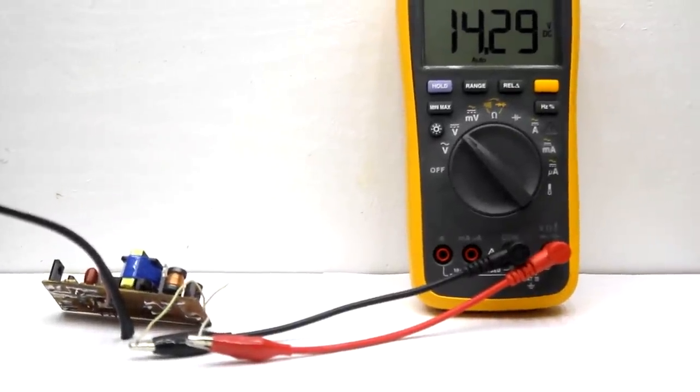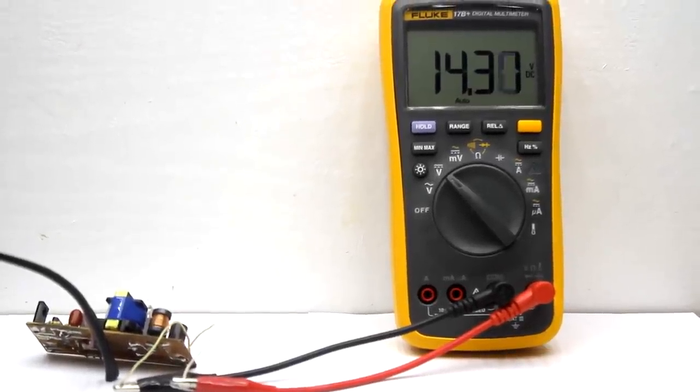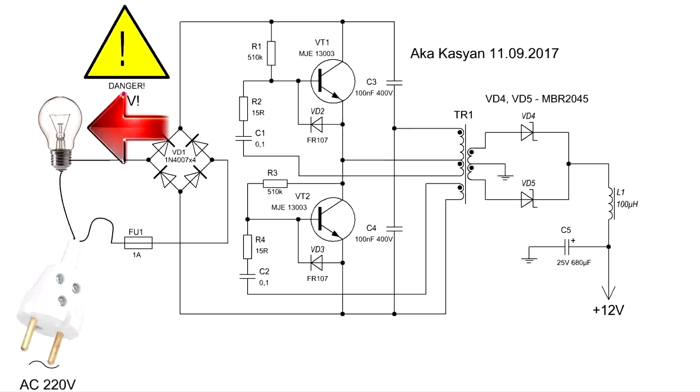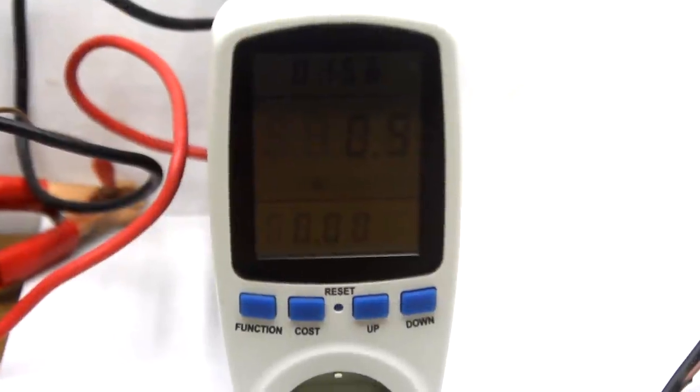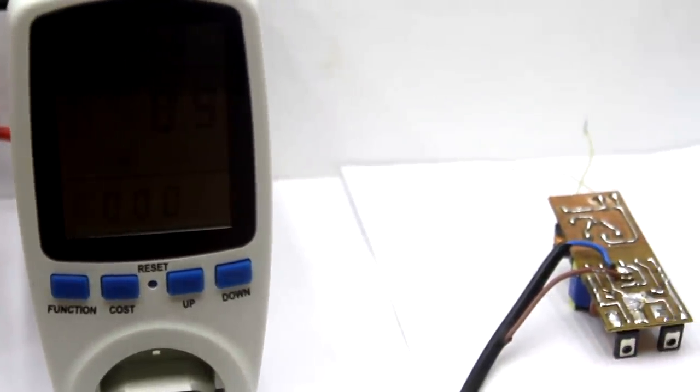Unlike the traditional circuit of the electronic transformer, our version is launched without load. At idle, the filament shouldn't be illuminated. The circuit consumes only 1 watt. Naturally, the transistors will not heat it in any way.